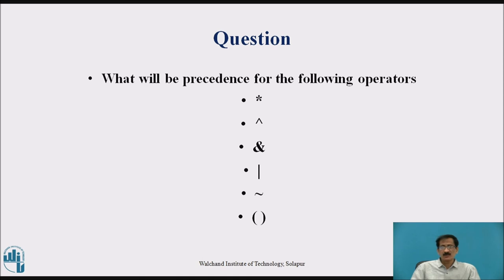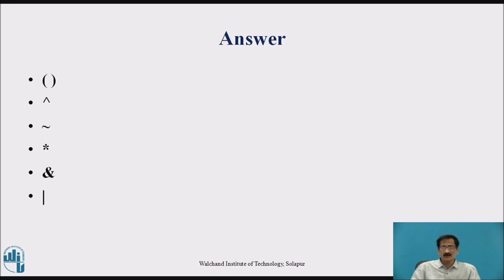What will be the precedence for the following operators: multiplication, power, or, not, and, parenthesis? The answers are: first solve parentheses, then power, then not operation, then multiplication or division, then and operation, then or operation.